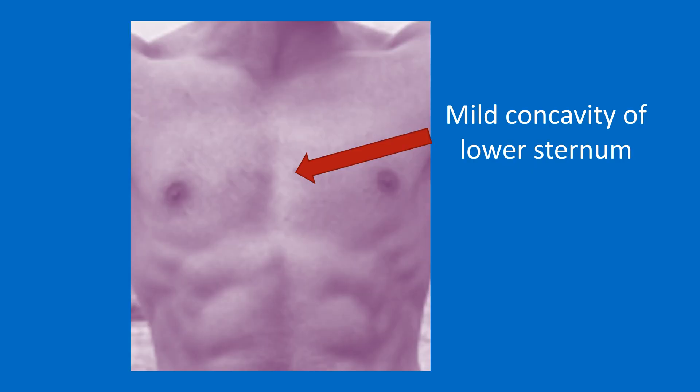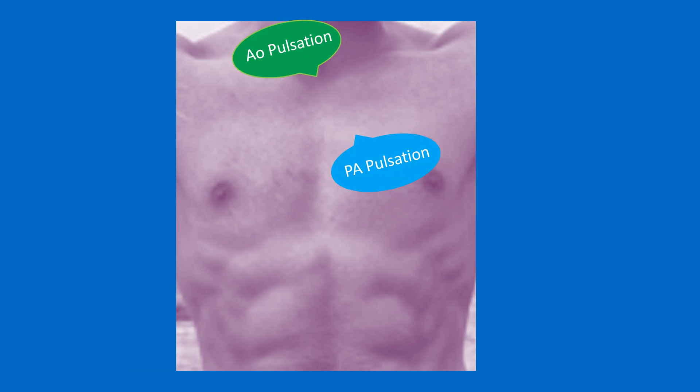Precordial examination starts with inspection, though inspection and palpation are often combined in regular practice. Some features to look for are sternal deformities like pectus excavatum, which is a concavity of the sternum and the commonest congenital malformation of the chest wall, possibly associated with congenital heart diseases like ventricular septal defect. Pectus carinatum is sternal prominence, also known as pigeon chest, and can occur in congenital heart diseases with large left-to-right shunts in infancy.